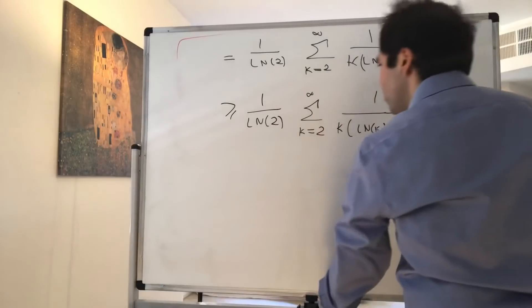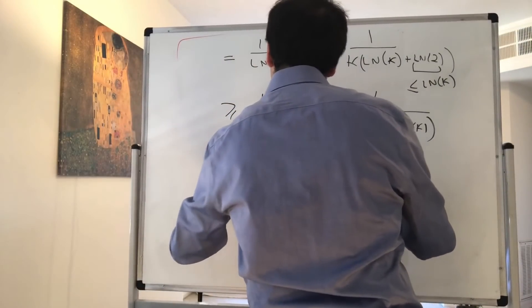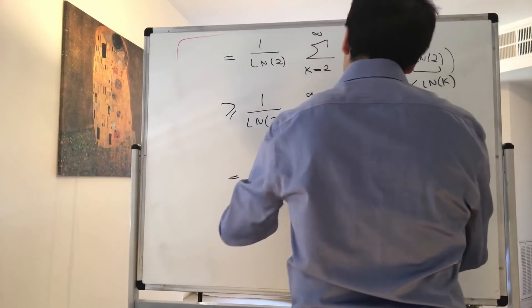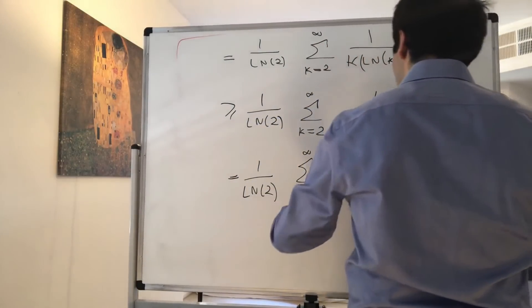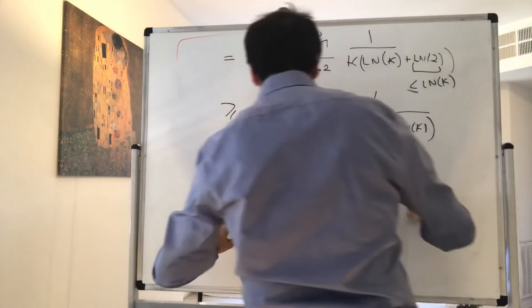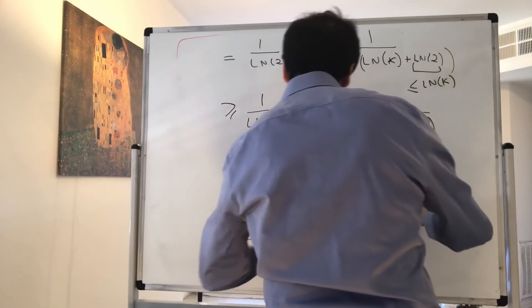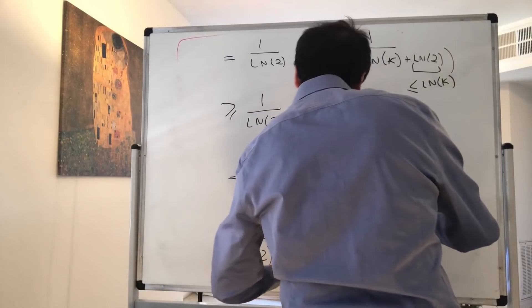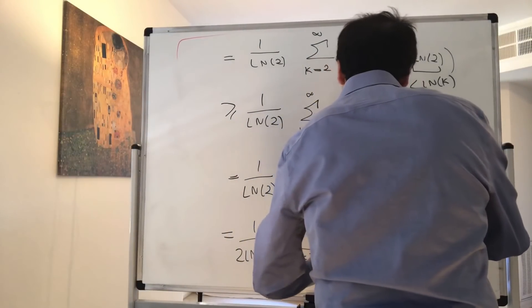And that becomes 1 over 2 ln of 2, the sum from k equals 2 to infinity of 1 over k ln of k.